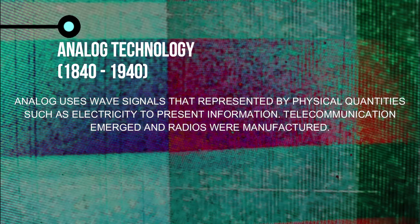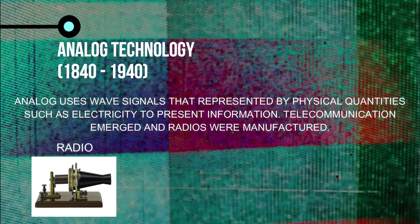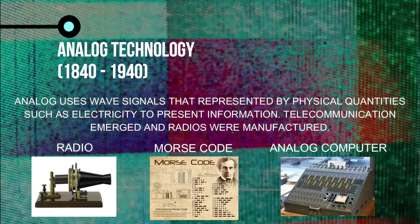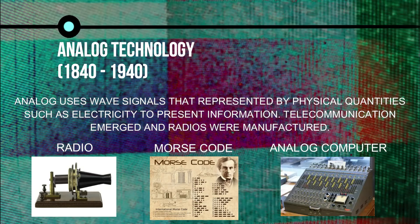Analog technology uses signals represented by physical quantities such as electricity to present information. During the analog technology period, the early inventions of telecommunication emerged and radios were manufactured. The Morse code and analog computer were also created during this time. Almost all of the inventions in this period were marked as a stepping stone for the emergence of new technologies to make the initial inventions more simple.